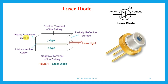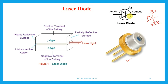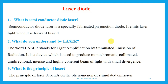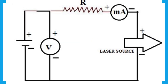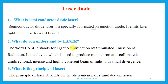Now we will go to the laser diode. A laser diode is again a P-N junction diode with P-type and N-type semiconductors and an intrinsic active region through which laser light is emitted once power is supplied. The symbol has a crossing with light emitting from it, slightly different from the LED symbol. What is a semiconductor diode laser? It is a laser fabricated as a P-N junction diode that emits laser light when forward biased. What do you understand by laser? Laser stands for Light Amplification by Stimulated Emission of Radiation.